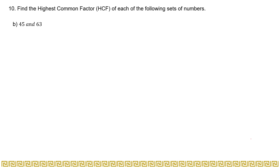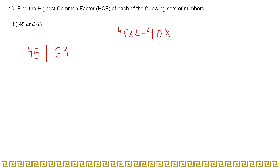Let's start with the division method for 45 and 63. First, put the division symbol, write the greater number — 63 — inside and the smaller number — 45 — outside. Now divide: 45 multiplied by 2 gives 90, which is greater than 63, so we use 45 times 1, which is 45. Subtracting: 63 minus 45 gives 27.